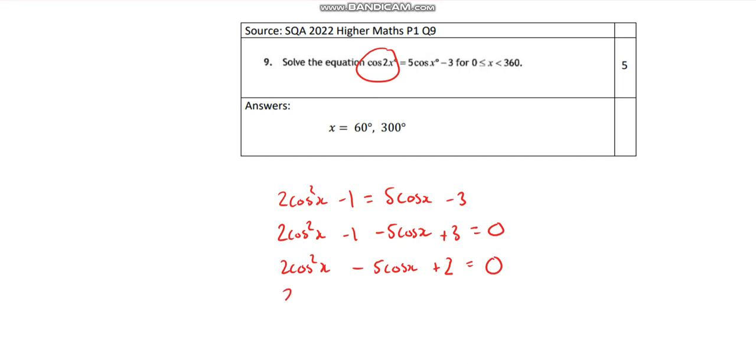And then same as before, I will call that 2x squared. Take away 5x plus 2 is 0. So I'm calling x, big X, is the same as cos x.